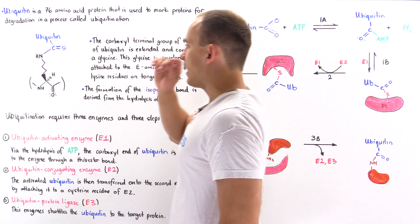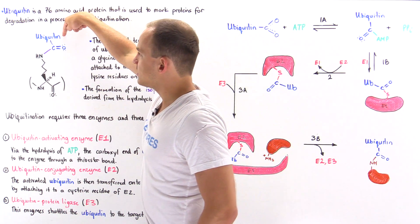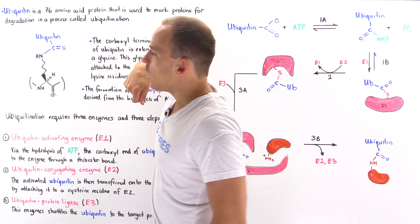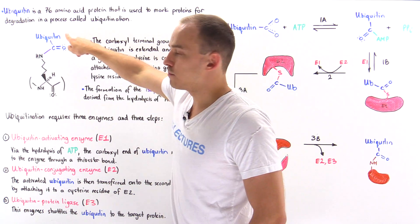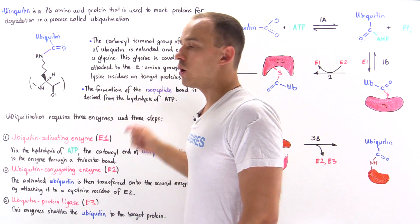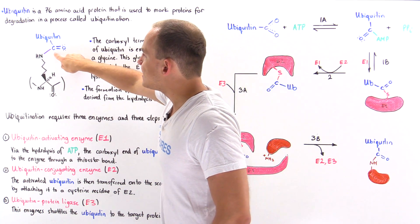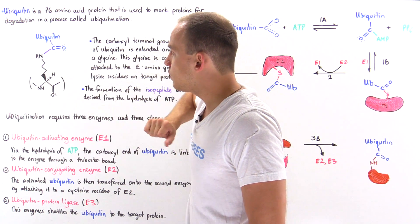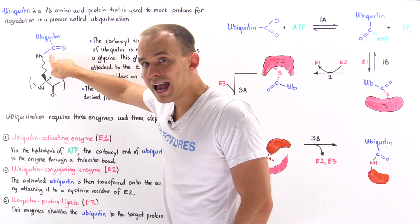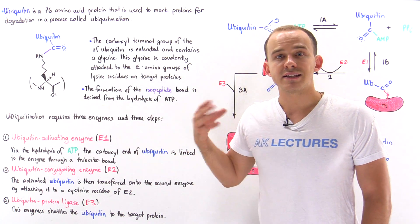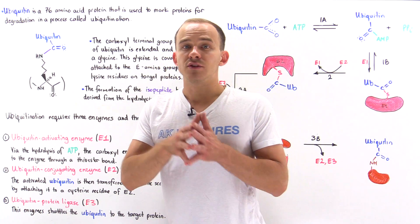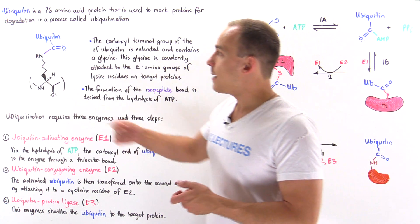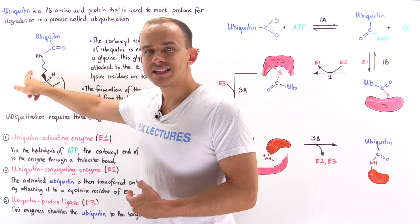Let's take a look at the following diagram. This is our ubiquitin molecule, that 76 amino acid polypeptide chain. On the carboxylate end of that molecule we have a glycine residue — a glycine amino acid. It is this glycine amino acid on the carboxylate end of ubiquitin that is actually attached onto the target protein. The lysine residues on the target protein are used to generate a bond to attach the ubiquitin to that target protein.